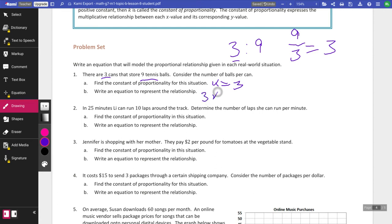So then I know that 3k equals y. I'm sorry, not 3k. 3x equals y. My constant of proportionality times my x, the number of cans is going to get me to the y. Just real quick, we'll do a chart. So if I have one can, I have three tennis balls. If I have two, I have six. If I have three, I have nine. So my constant of proportionality k equals three.